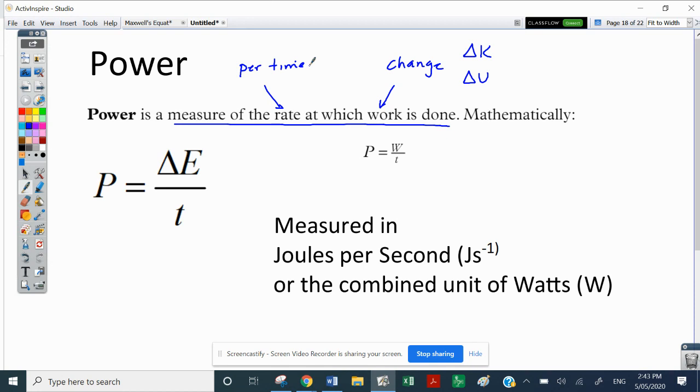So the textbook has your formula as P equals W on T where W at the top stands for work. So you will find other formulas saying that it's delta E, which is the change in energy levels. In other words, it's delta K or delta U on T.